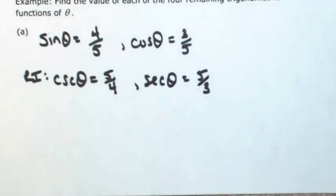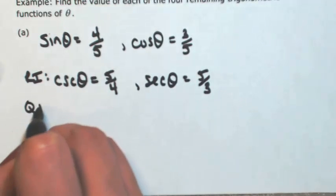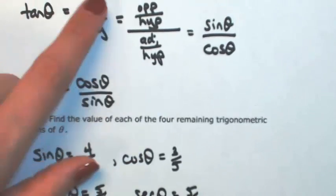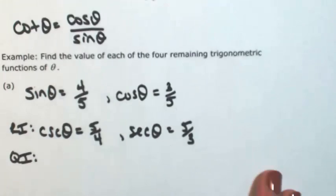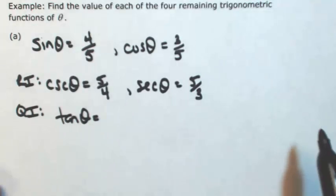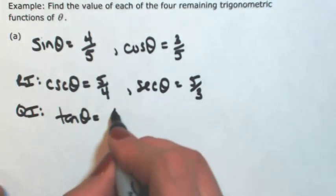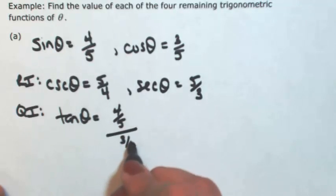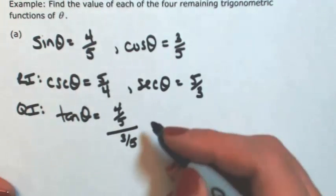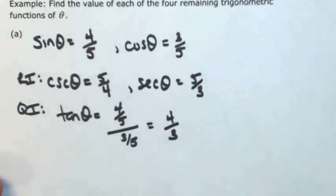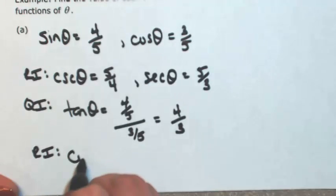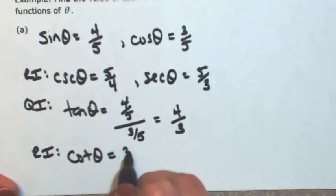We've exhausted the reciprocal identities, so let's go with the quotient identities. Since we're given sine and cosine, we immediately know the tangent of theta as sine divided by cosine — so 4/5 over 3/5. Since we're dividing top and bottom by the same thing, those 5s cancel out, giving us 4/3. Then using the reciprocal identity, now that we know tangent, we know cotangent — so 3/4.